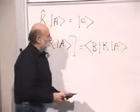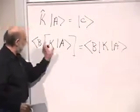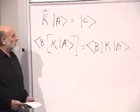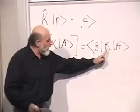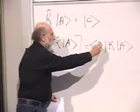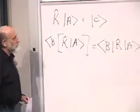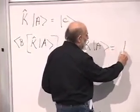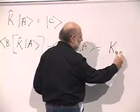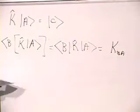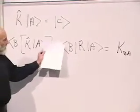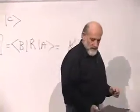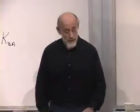The way that you read it is: K acts on A to give a new vector K times A, and then you take the inner product with B. The result is called the matrix element of K between vector B and vector A. This notation is very closely related to matrix notation.